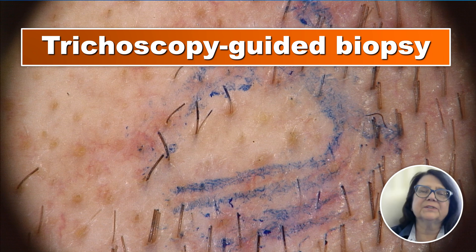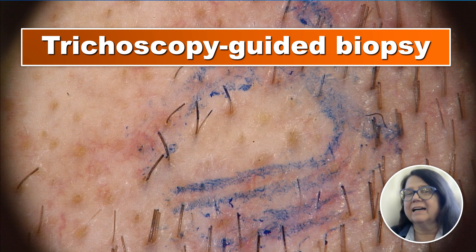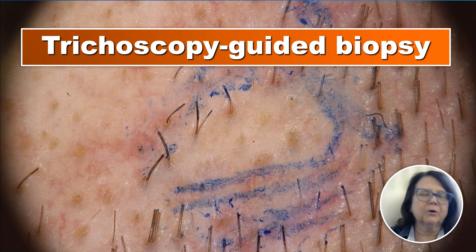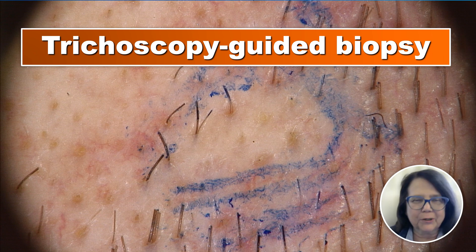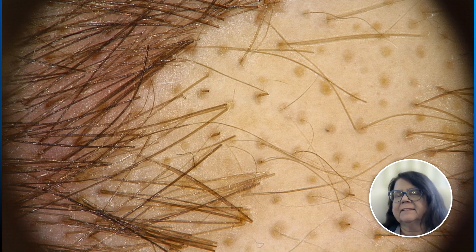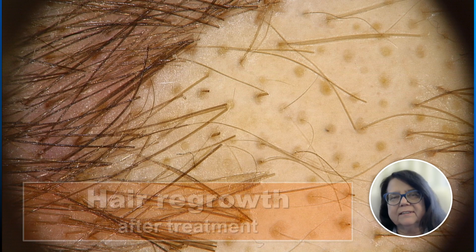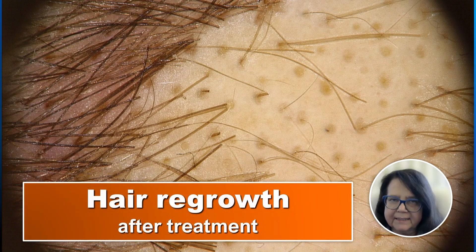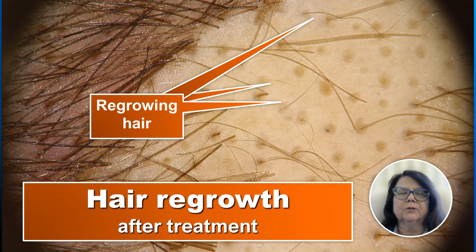In situations where clinical presentation and trichoscopy are not sufficient to make the diagnosis, we may perform a trichoscopy-guided biopsy. This is the type of image we like to see in our patients with dissecting cellulitis — the regrowth phase of the disease, where we see multiple small regrowing hairs.